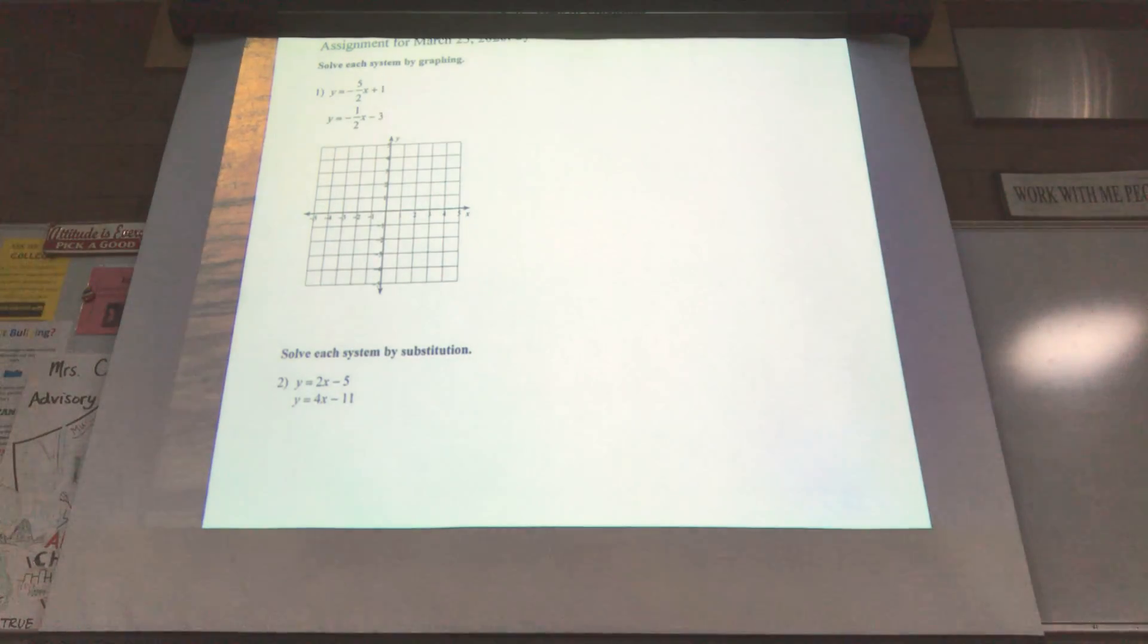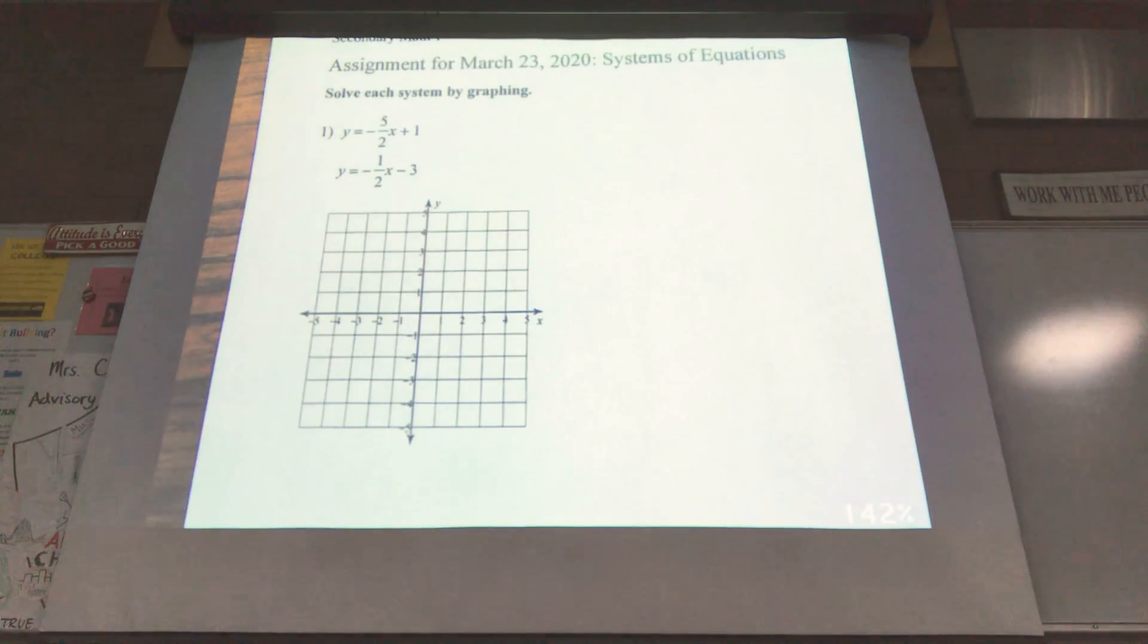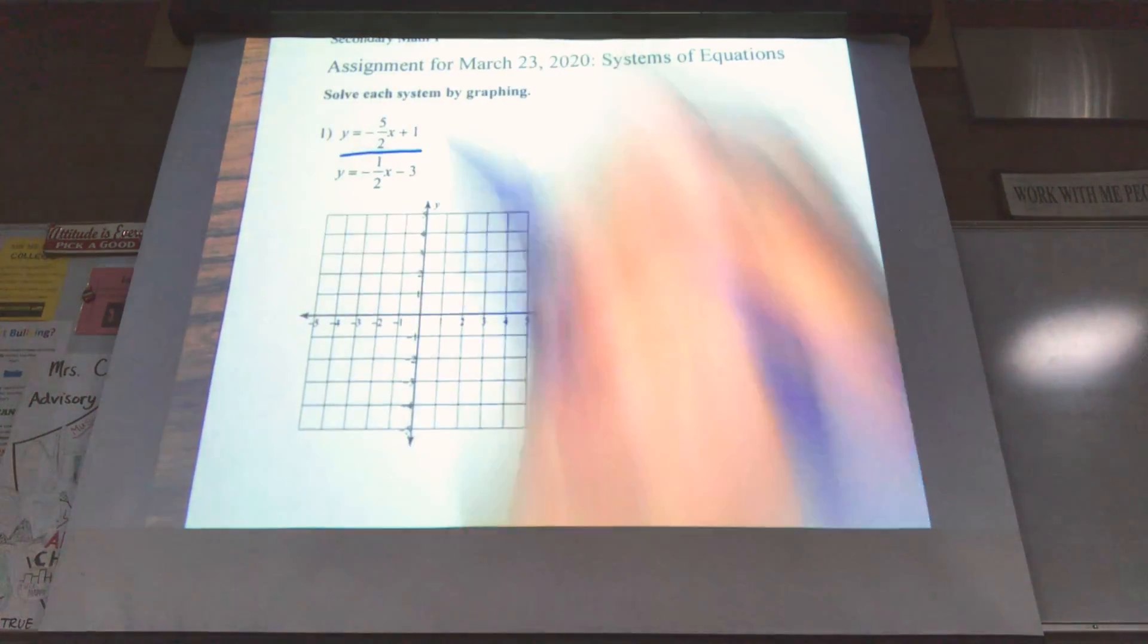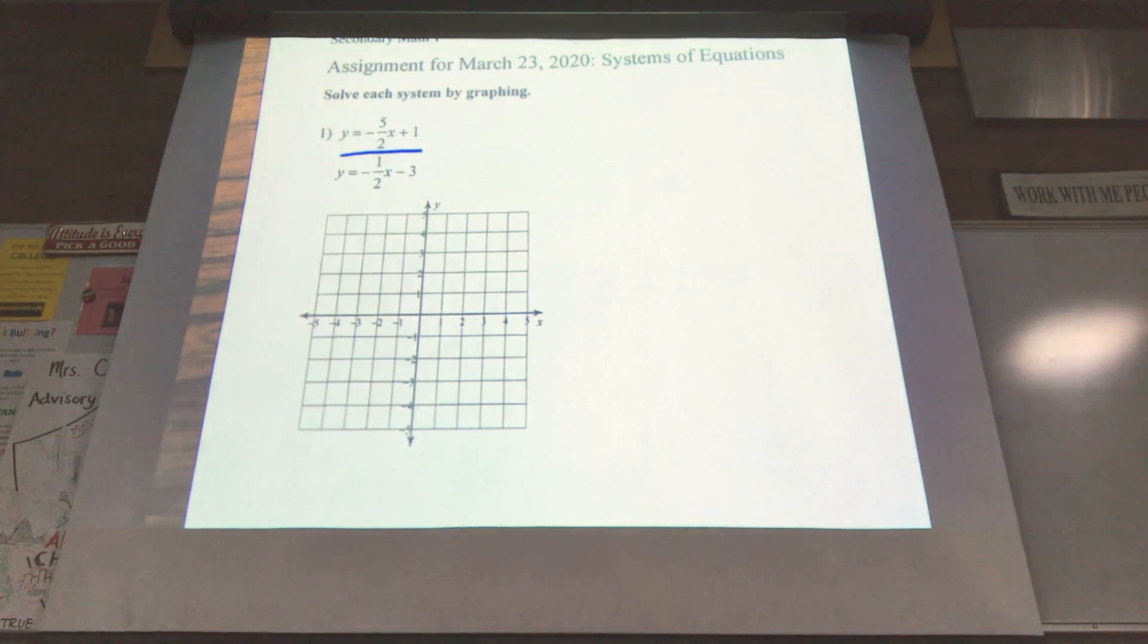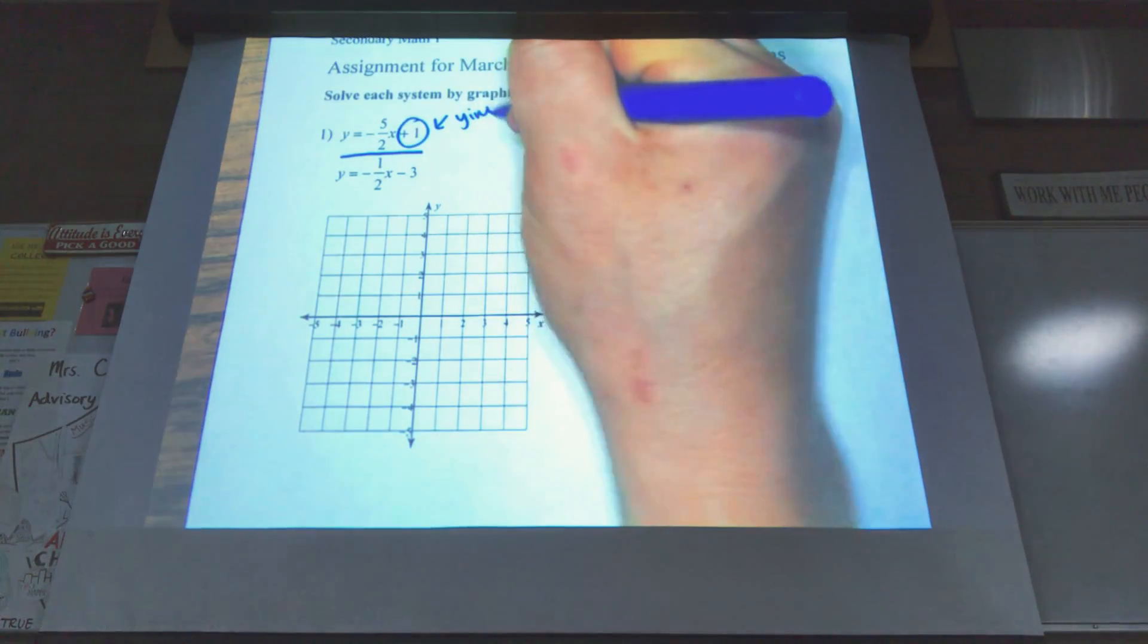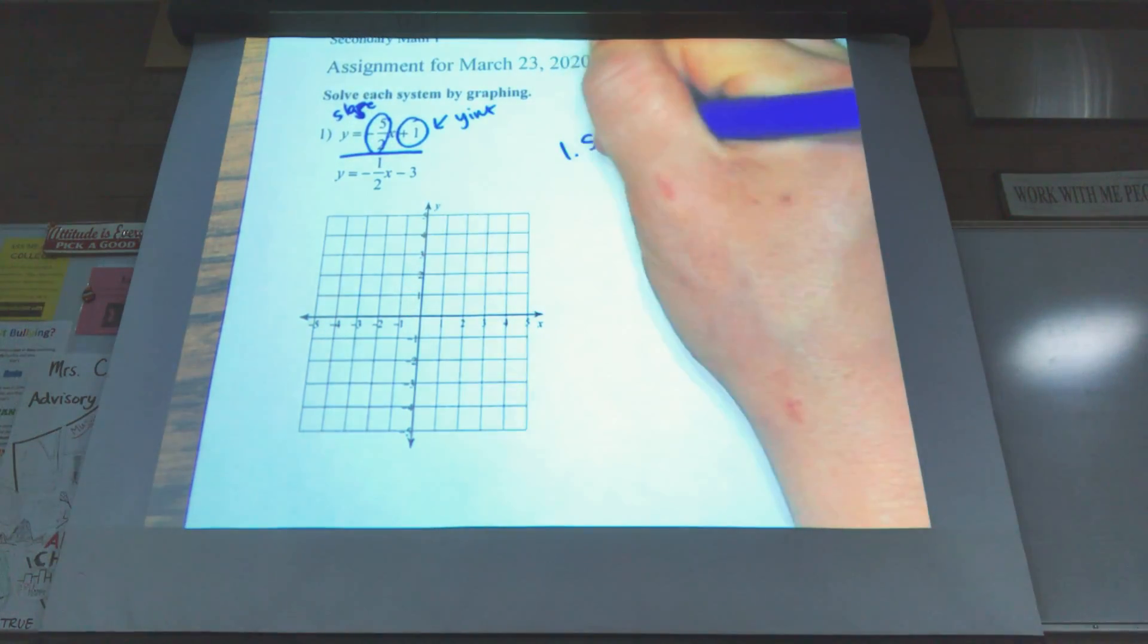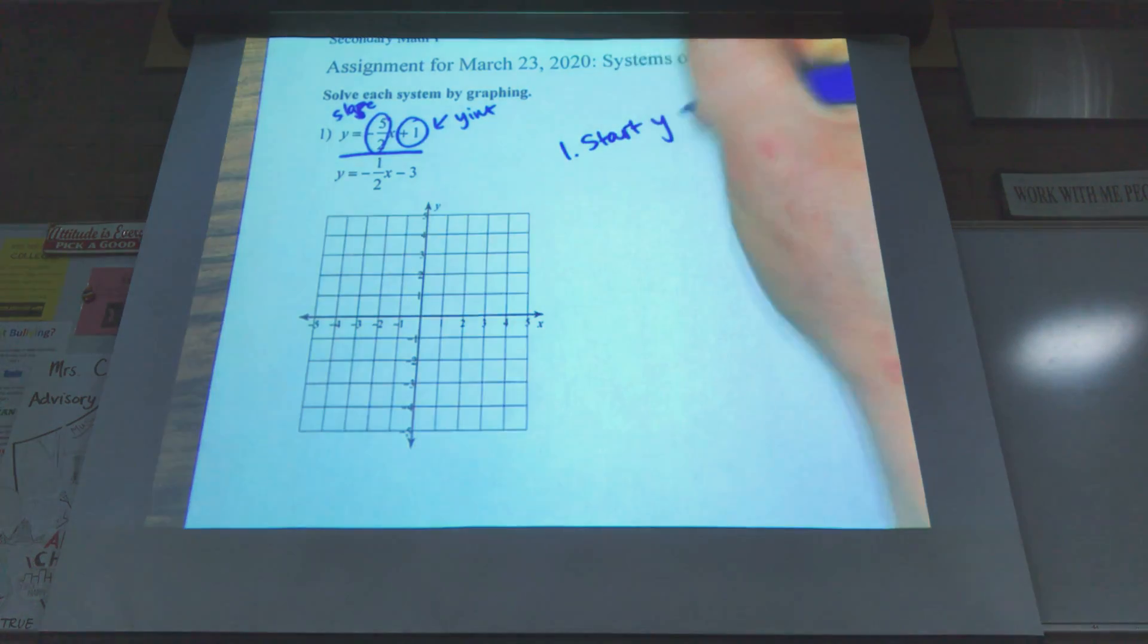So our first example, number one, we can see that we are asked to solve this system by graphing. We have two equations. First one right here, second one below it. We're just going to take these one at a time. These are both in slope-intercept form, which we know are y-intercept. Y-intercept is on the end. Our slope is always attached to our x. We always start with y-intercept. That's your starting point.